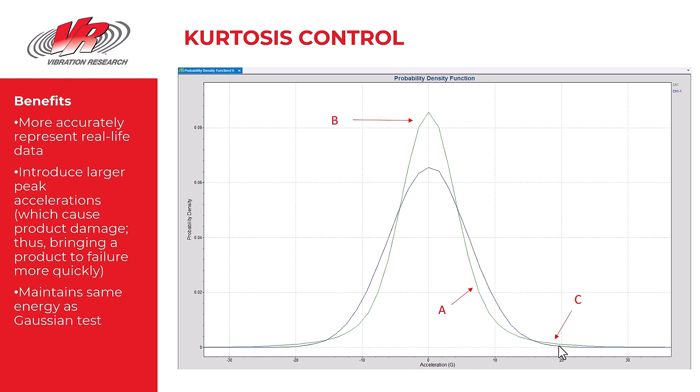And why would we do that? Well, what we know is that real life data tends to actually not be always Gaussian. And so if you want to match real life data, you will want to adjust your kurtosis value to the actual kurtosis value of your test.